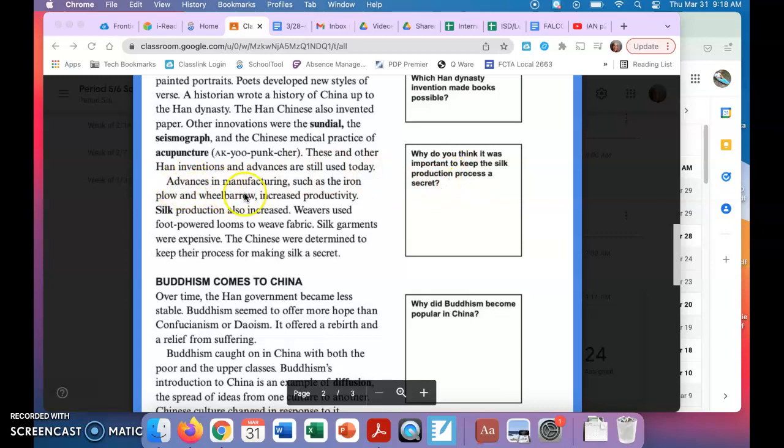Advances in manufacturing such as the iron plow and wheelbarrow increased productivity. Silk production also increased. Weavers use foot-powered looms to weave fabric. Silk garments were expensive.